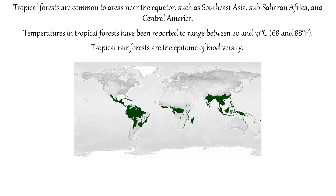Tropical forests are common to areas near the equator such as Southeast Asia, Sub-Saharan Africa and Central America. Temperatures in the tropical forests have been reported to range between 20 and 31 degrees Celsius, and tropical rainforests are the epitome of biodiversity.